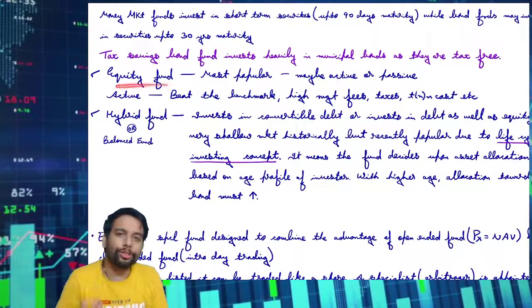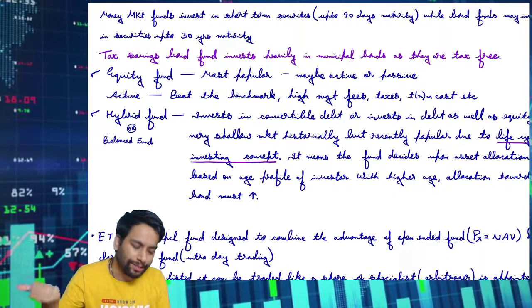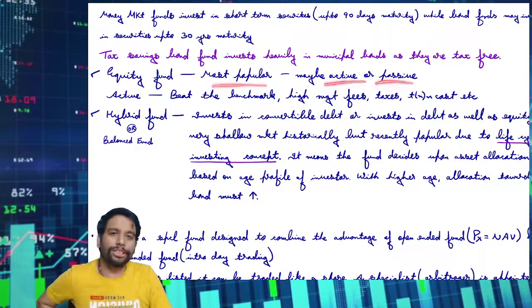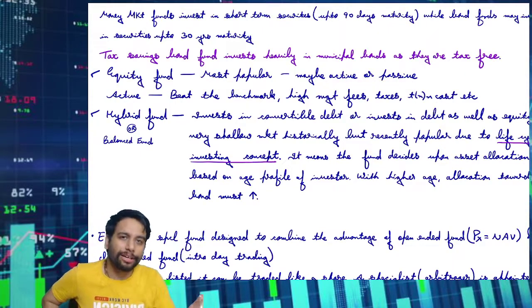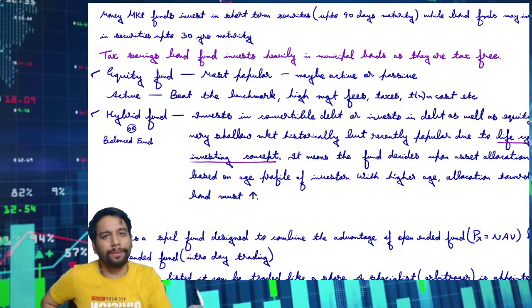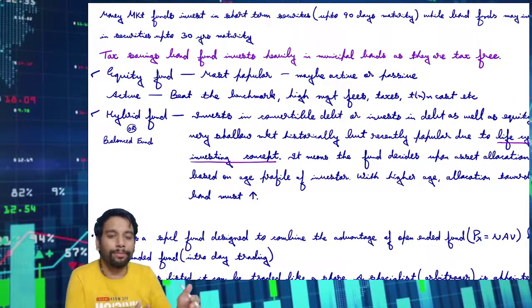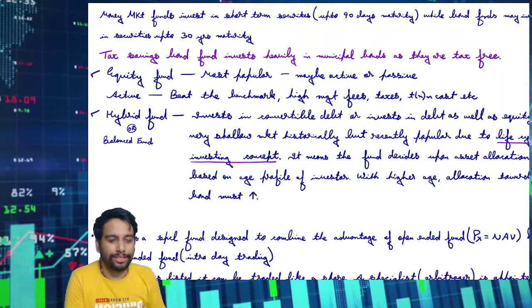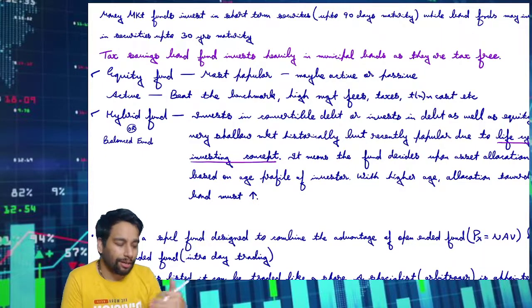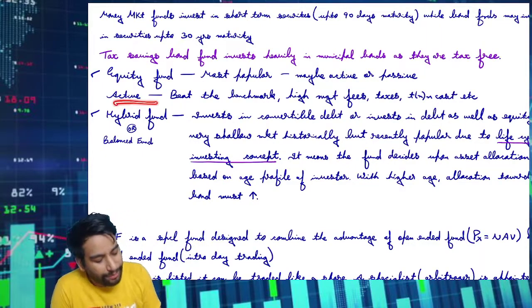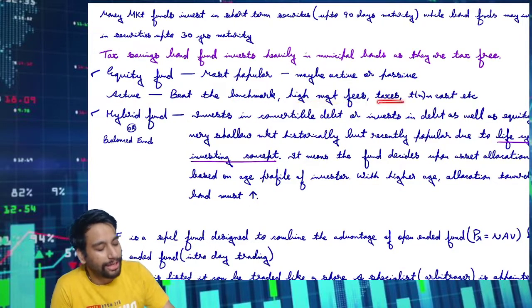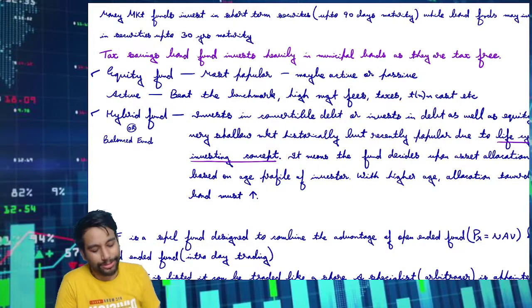Equity funds — as the name suggests, these invest in equity shares. They are the most popular and can be active or passive. For example, Nifty 50, IT sector (IT bees), banking (bank bees) — these are ETF types. Mutual funds also invest in IT companies, pharma, and different sectors. Active funds claim to beat their benchmark, but they come with higher management fees, higher taxes, and higher transaction costs.